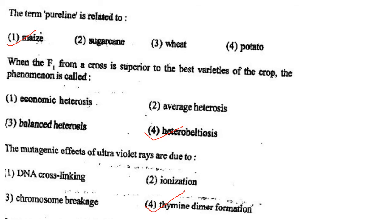Next one: When the F1 from a cross is superior to the best varieties of the crop, the phenomenon is called option 1, economic heterosis; option 2, average heterosis; option 3, balanced heterosis; option 4, heterobeltiosis. Answer is option 4: heterobeltiosis.